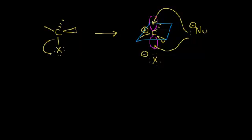You might think we'd get a mixture of products — 50% attack from the top, 50% attack from below. And normally you would expect that. But this leaving group, this negatively charged halogen, is going to shield one face of the carbocation a little bit. The positive and negative charges attract and form what's called an ion pair. So the nucleophile isn't as likely to attack from the bottom, though it can. You're going to get more attack from the top and some attack from below, so you'll get a mixture of products, but not quite a 50-50% mixture.